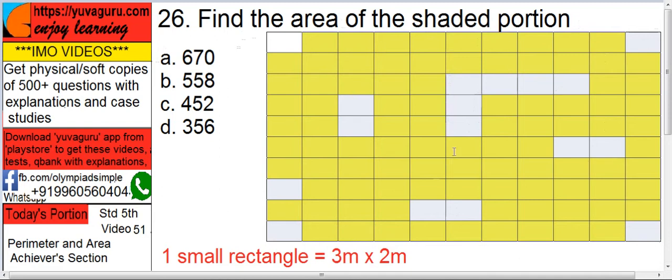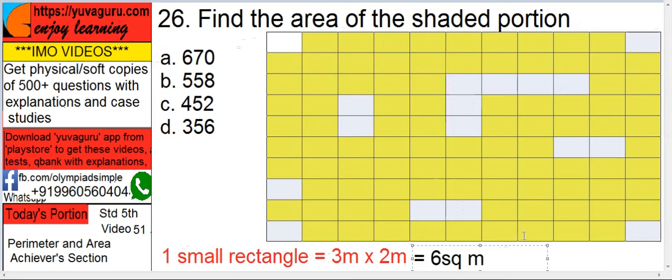Now what is given is one small rectangle equals to 3 meter by 2 meters. That is also available. Means total area is 6 square meters. So area of one small rectangle is 6 square meters. 3 by 2.